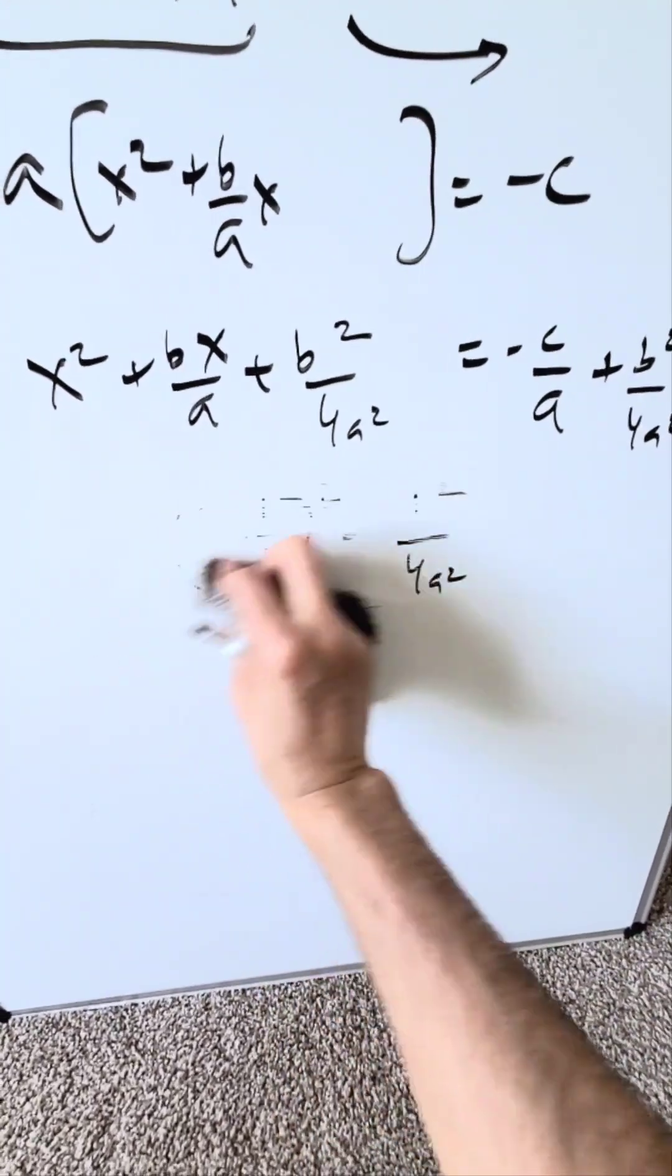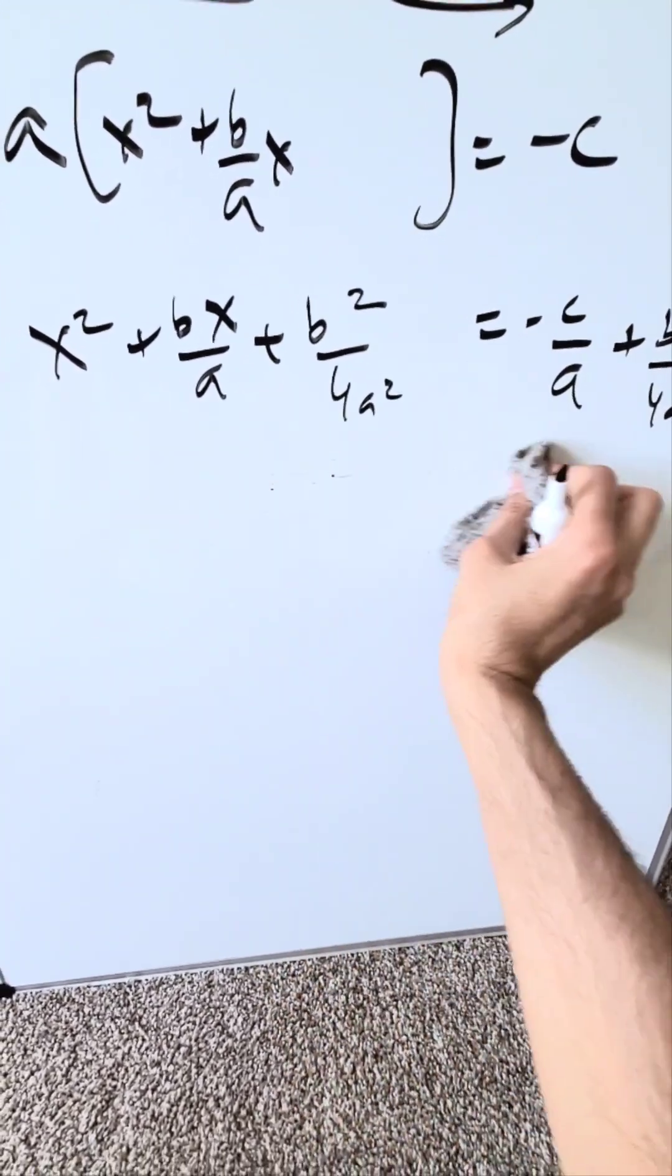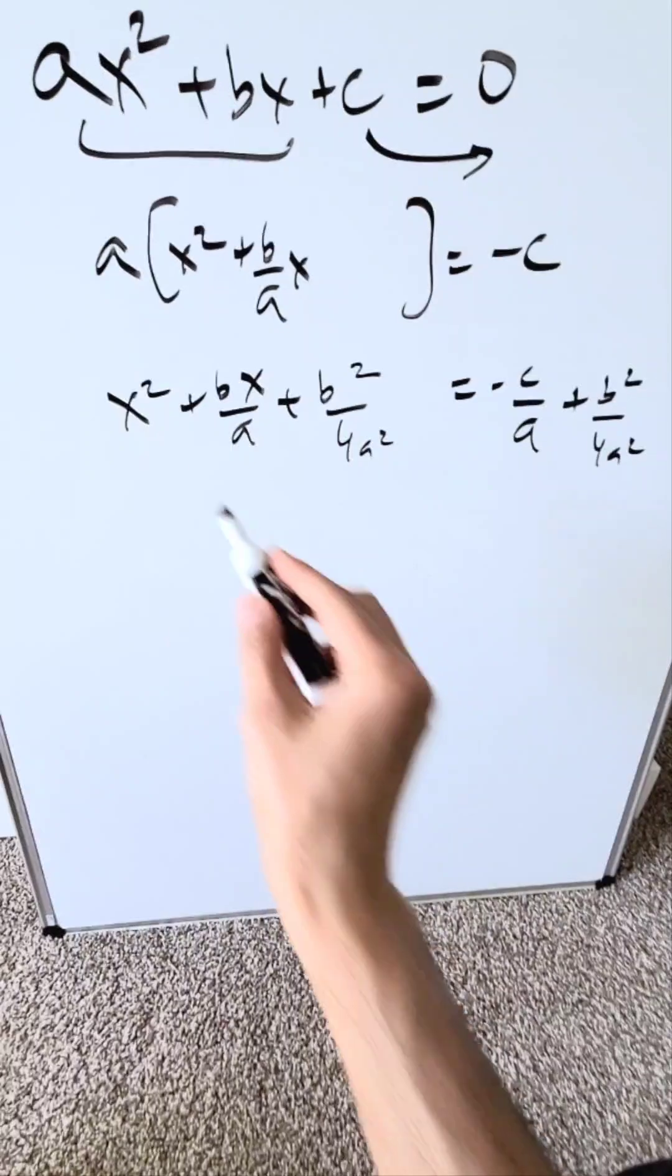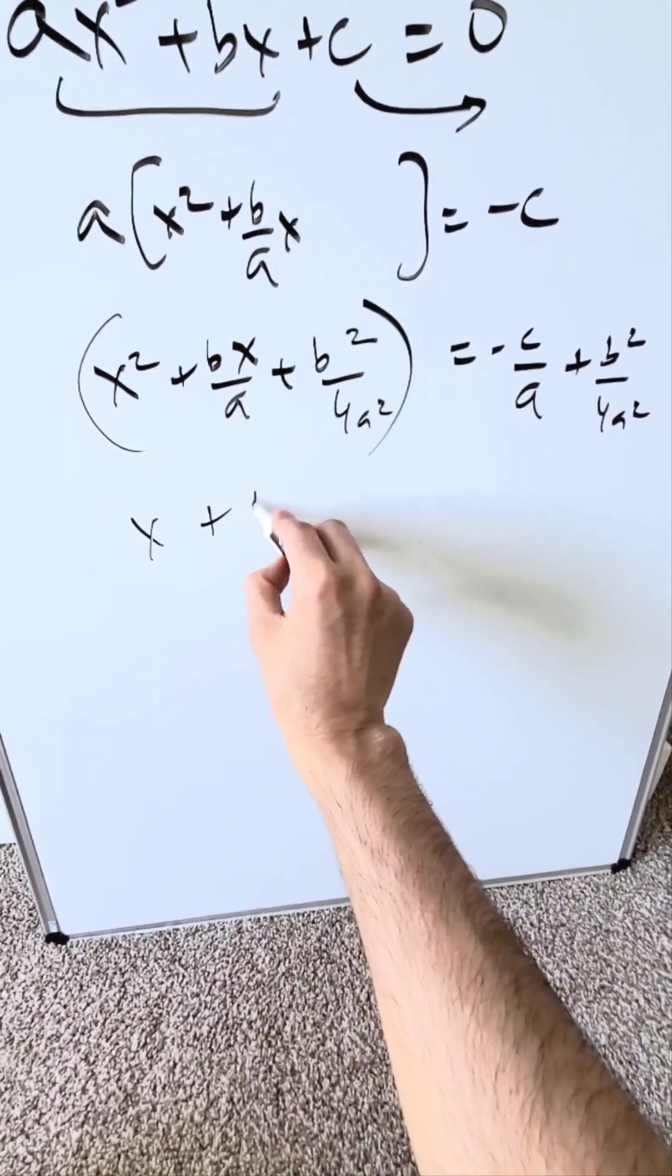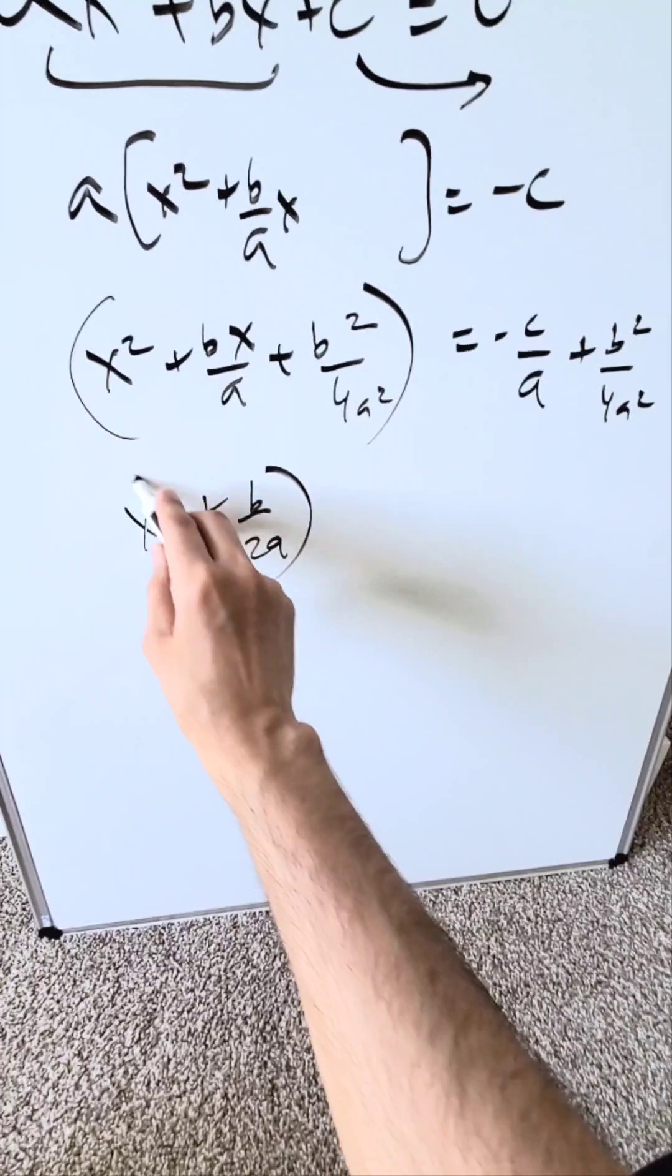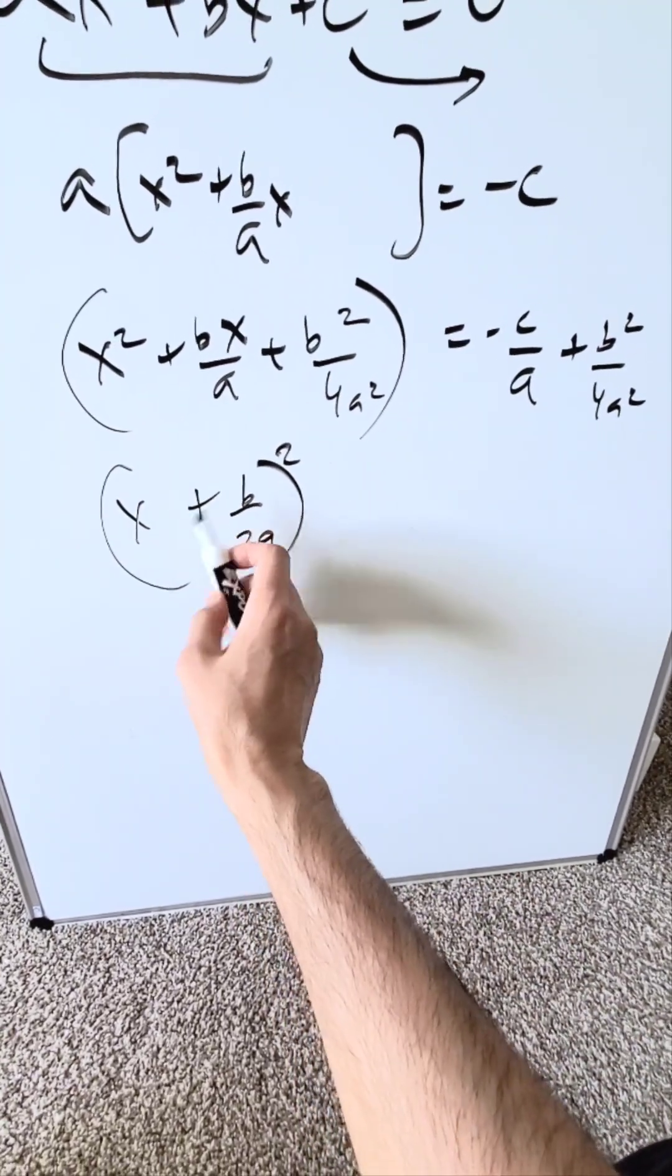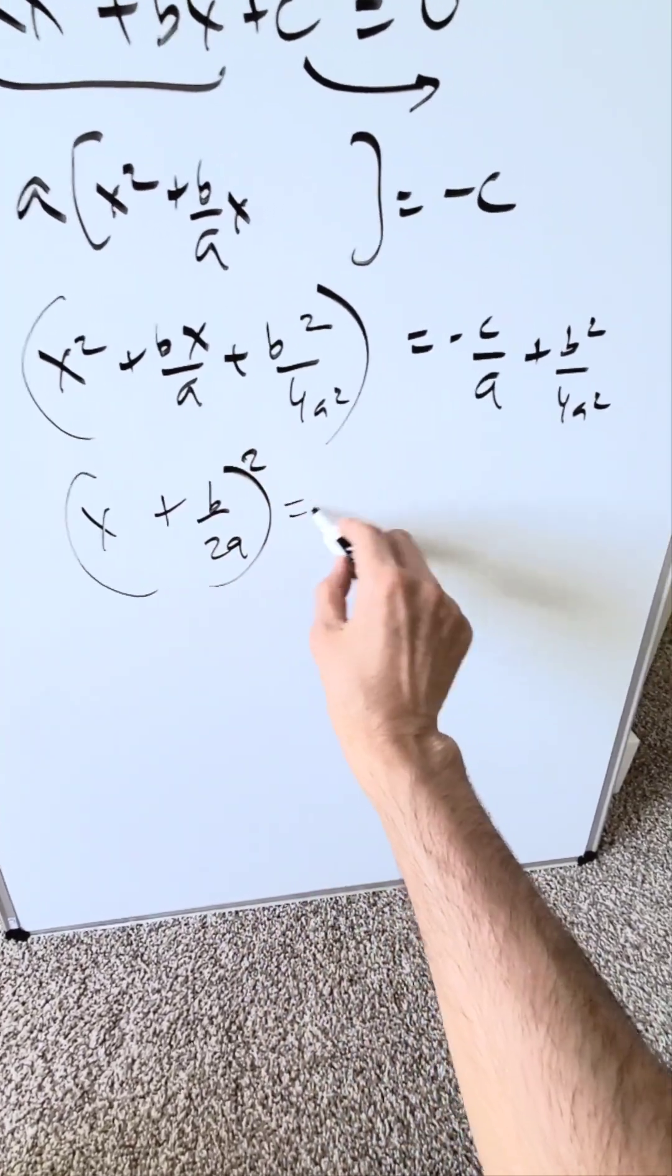Now erase this. You're going to proceed with your procedure. Now what does that mean? You're looking over here. Completed. You have x plus b over 2a whole squared. If you were to open up this, expand this, you'll end up exactly over here.